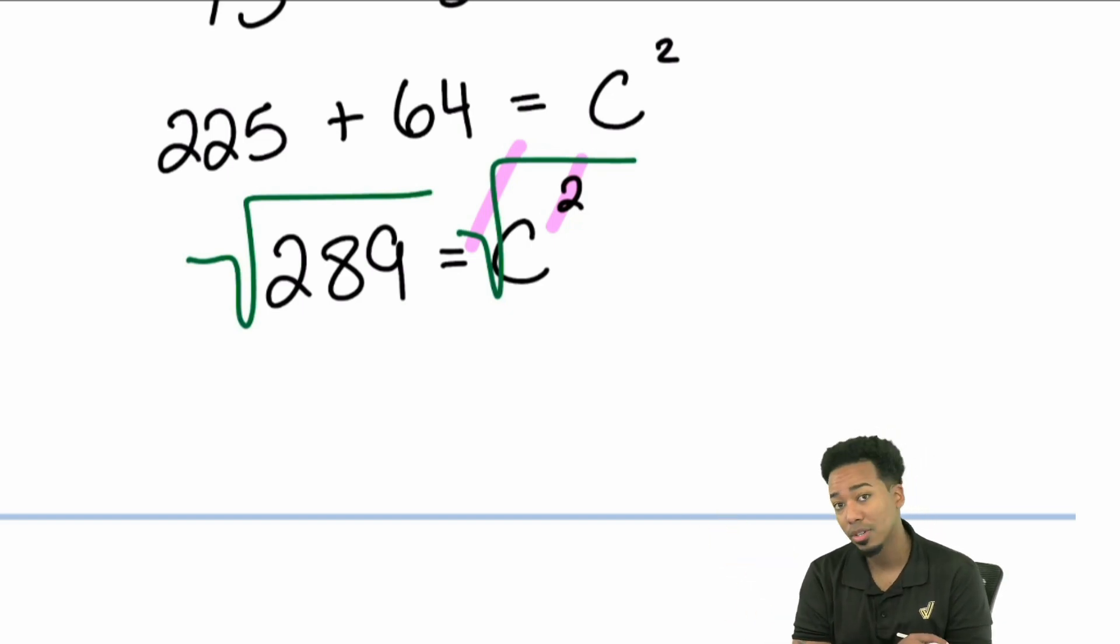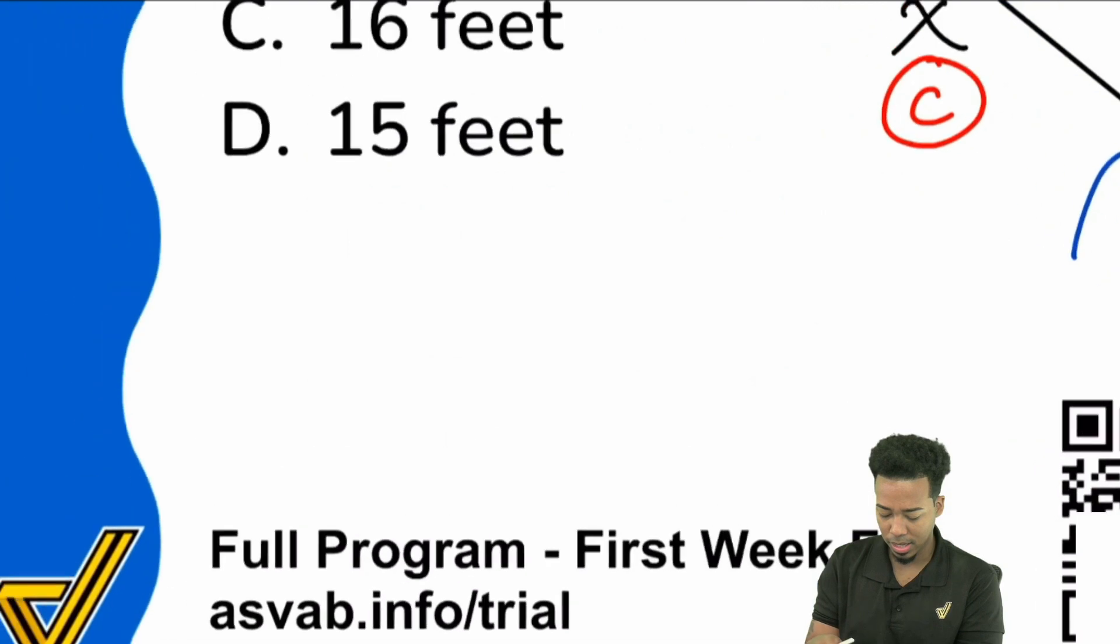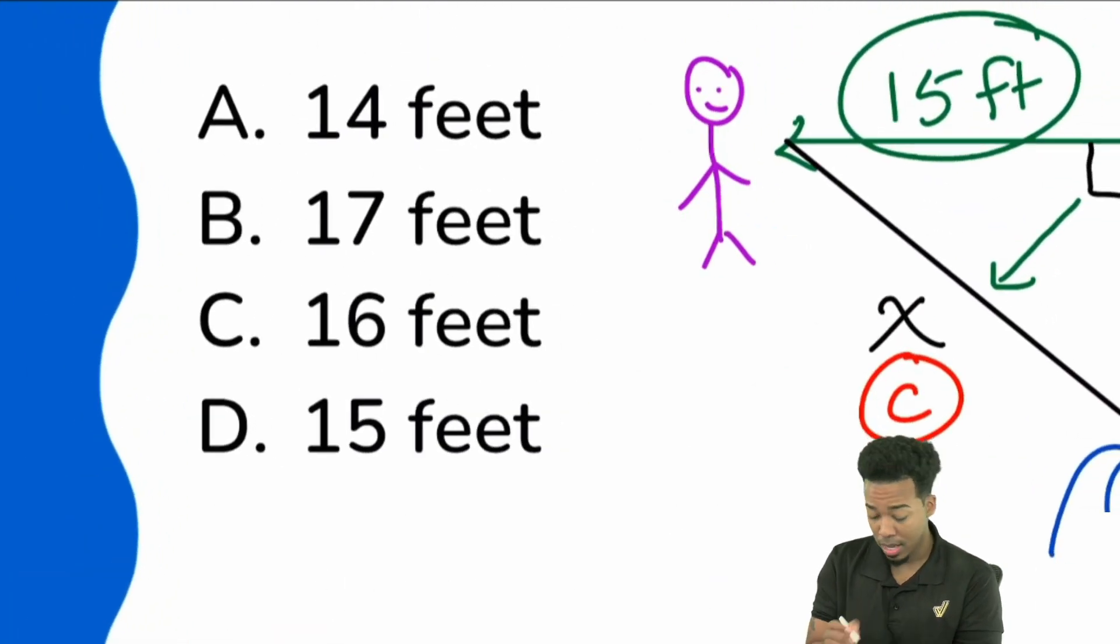And you might want to ask yourself, how do you get a nine at the end? What does the number have to end in? If you do the same number times itself, what would give you nine at the end? Let's take a look at the answer choices. Will a five times five end in a nine? No, that ends in a five, 25.